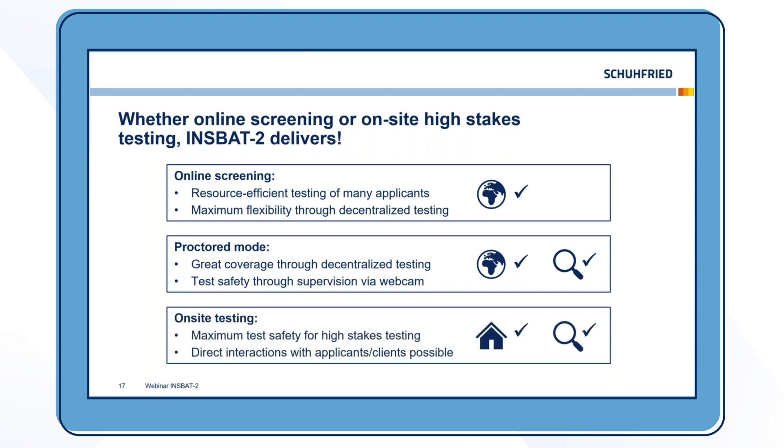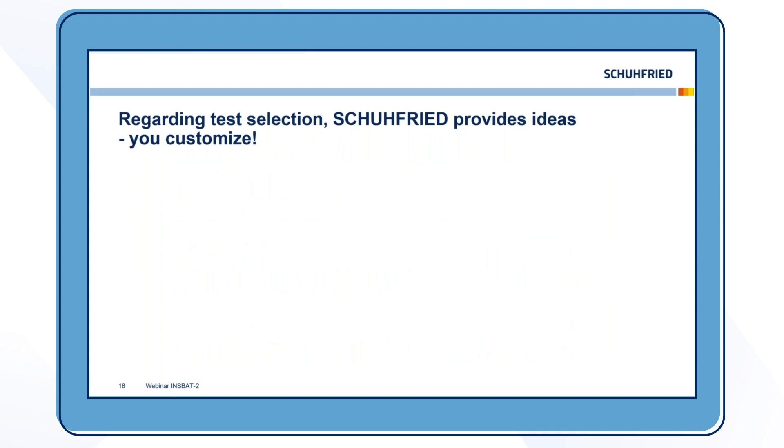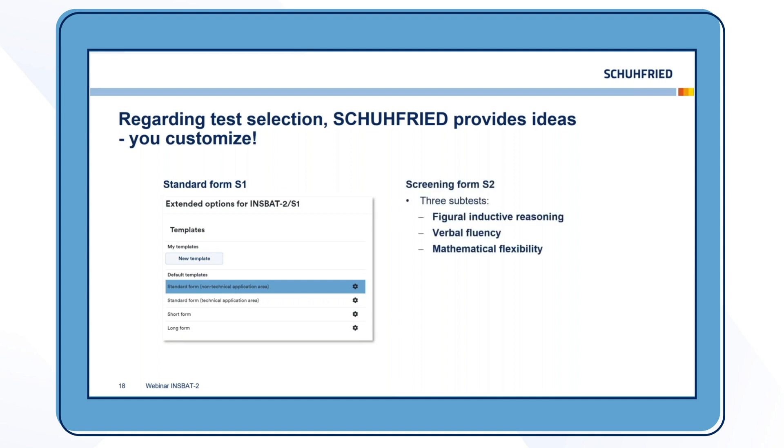Last but not least, we have on-site testing, which gives you maximum test safety for high stakes testing. It also makes possible the direct interaction with applicants or clients, which might be especially good in counseling settings, or if you have young clients or applicants. Regarding test selection, Schuhfried provides ideas and you can customize. Here you can see the standard form as one that has extended options. There's default templates that we provide. One is for non-technical application areas, one for technical application areas, and then we have a short form and a long form. Furthermore, we have the screening form S2, which has three subtests: figural inductive reasoning, verbal fluency, and mathematical flexibility. It has its own item pool and can be sent out openly over the web.